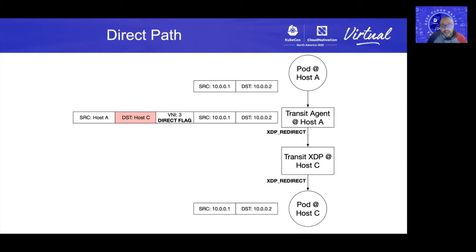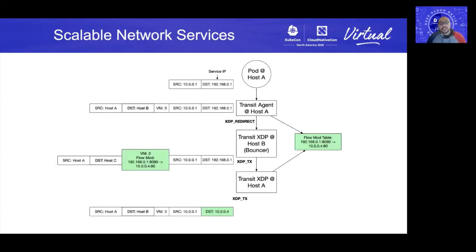At the same time, this allows the management plane to provision the network by only making a few RPC calls to a couple of hosts in the cluster — not all hosts. If you think about the role of the bouncer now, comparing it to a logical switch or logical router in OVN, it is an in-network controller rather than a virtual switch. It's like a microservice in the network that provides distributed functions to the endpoints. We take this observation to extend Mizar's functionality beyond providing simple connectivity between pods. We extended the bouncer functionality to implement Kubernetes services as well. Consider pod 10.0.0.1 sending packets to the 192.168.0 service.